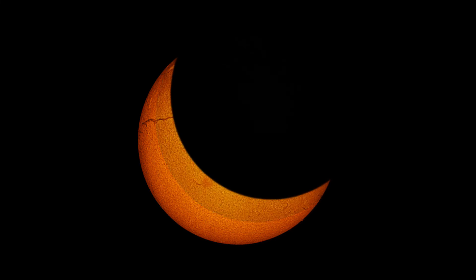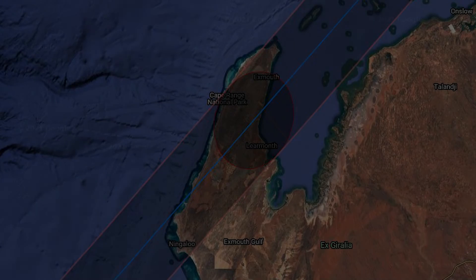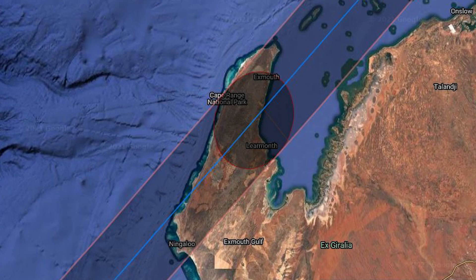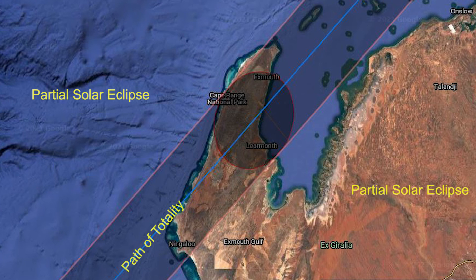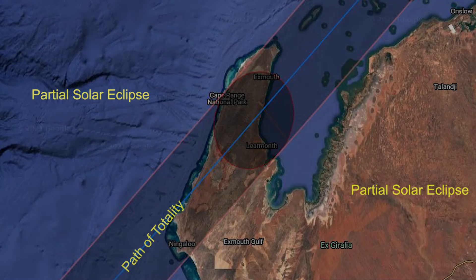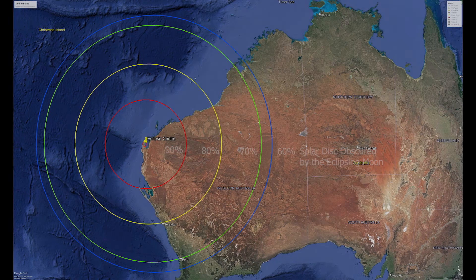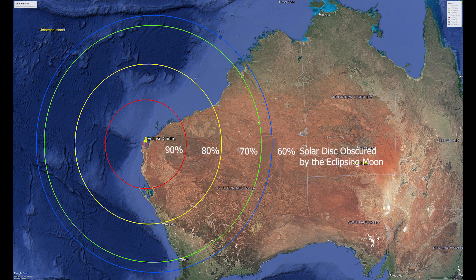Observers beyond the path of totality will witness a partial solar eclipse, where only part of the solar disk is covered. The further from the path of totality, the less of the Sun is obscured by the Moon.